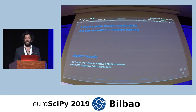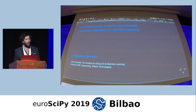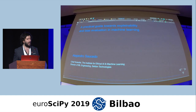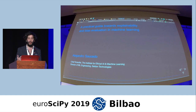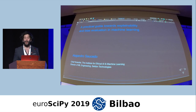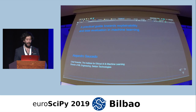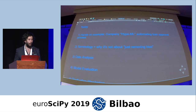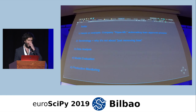My day-to-day role is at a company called Seldon. We have an open source, open core machine learning deployment library, and we focus on the large-scale deployment of machine learning models in Kubernetes. Some of the examples that I'm going to be using today are leveraging Seldon and they're all open source. This can be found in my GitHub repo, which I'm going to link at the end.